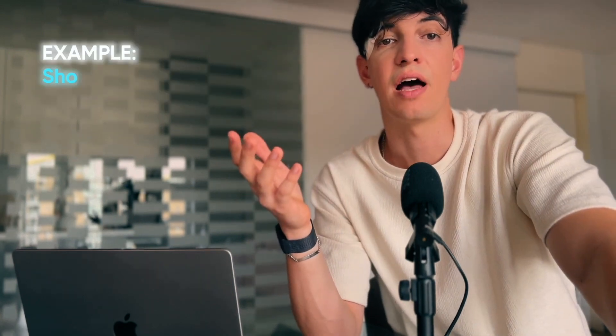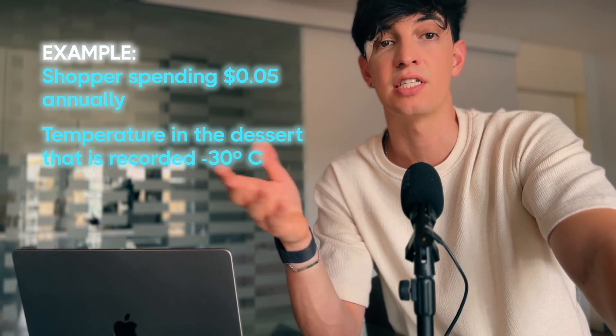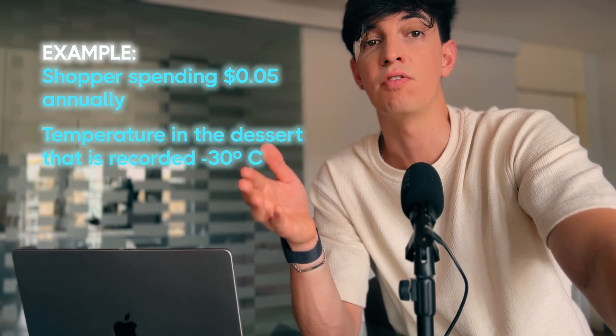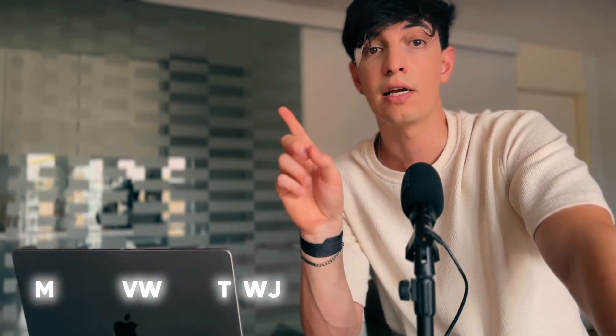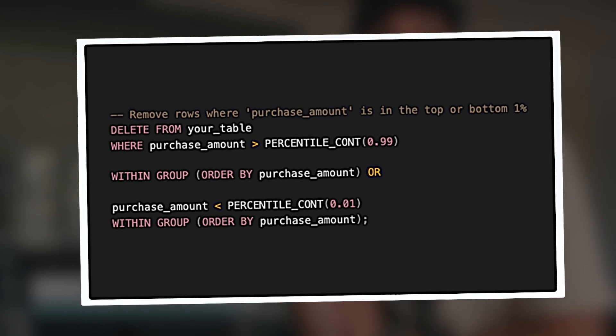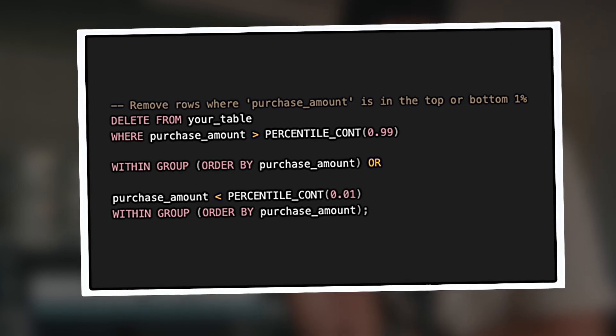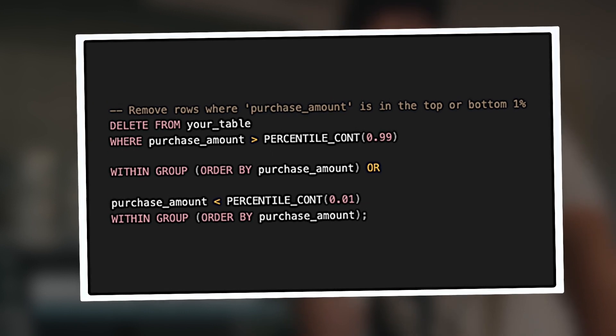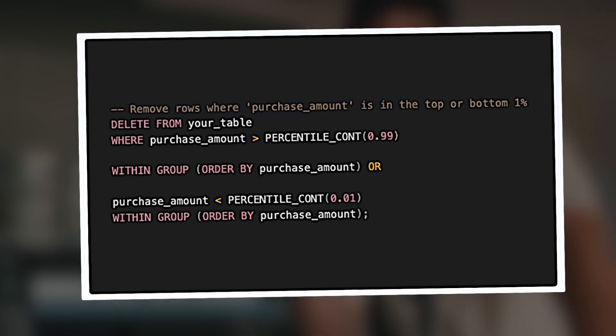Then you have outliers — extreme values, either very high or very low. An example could be a shopper spending $0.05 annually, or a temperature in the desert recorded as minus 30 degrees Celsius. Outliers typically indicate either an interesting trend or a flawed data collection mechanism. You can exclude outliers because they can skew your analysis, affecting averages and overall statistical readings. Consider omitting data that falls beyond a certain percentile range. In SQL, to remove rows where purchase amount is in the top or bottom 1%: DELETE FROM your_table WHERE purchase_amount > PERCENTILE_CONT(0.99) WITHIN GROUP (ORDER BY purchase_amount) OR purchase_amount < PERCENTILE_CONT(0.01) WITHIN GROUP (ORDER BY purchase_amount).